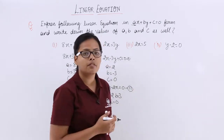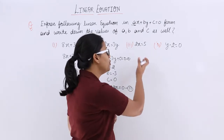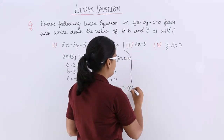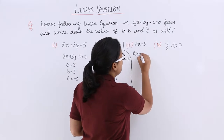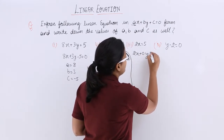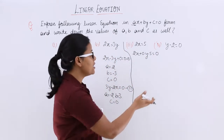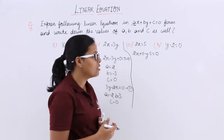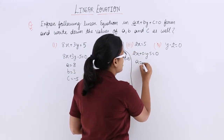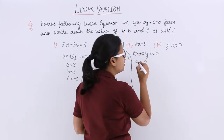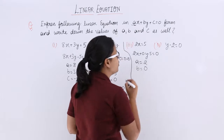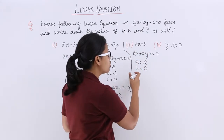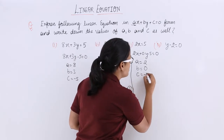Now let's take our third question, which is 2x equal to 5. Again you will make this in the form ax plus by plus c equal to 0. So we write it as 2x plus 0 into y minus 5 equal to 0. Comparing coefficients: the value for a is 2, value for b is 0 — because 0 multiplied by any number is 0 — and value for c is minus 5.